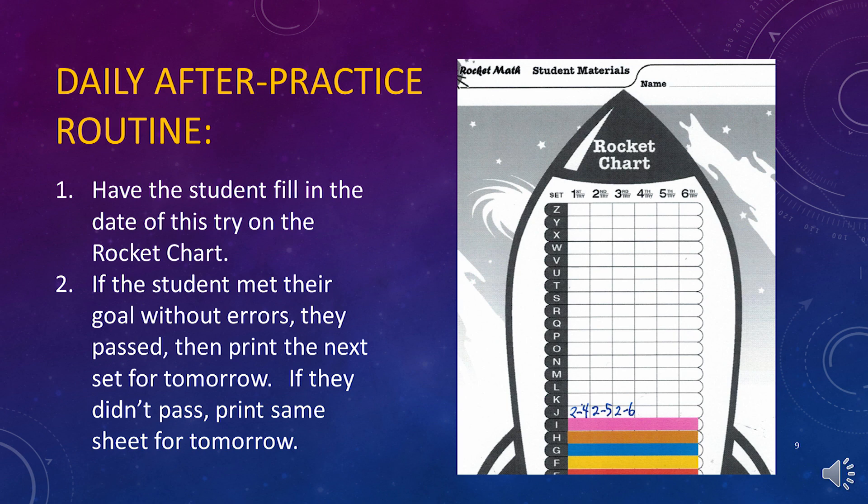Here's the daily after-practice routine. Step one, have the student fill in the date of this try on their rocket chart. Step two, evaluate to see if the student passed. If they had no errors and they met their individualized goal for the one-minute timing from the goal sheet, then they passed. Next, print the next lettered set from the website. If they didn't pass, print the same sheet again to practice tomorrow.